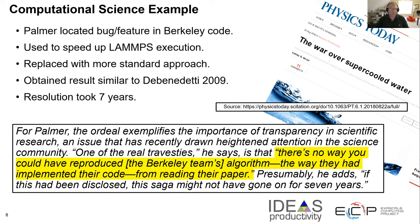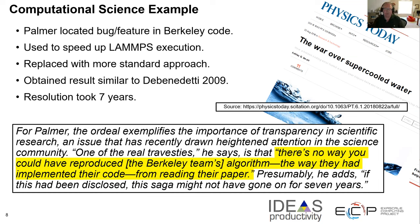The Berkeley 2011 paper really wasn't reproducible because they didn't document well enough what they were doing. They said, oh, this is just a minor change, we're not even going to bother documenting it, and they just went on. Then they weren't responsive to their statement that they would make the code available. This is an example of how it can affect individual science and kind of blow up and take a long time to resolve.